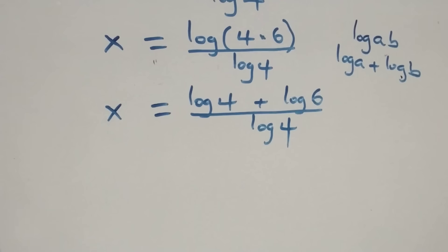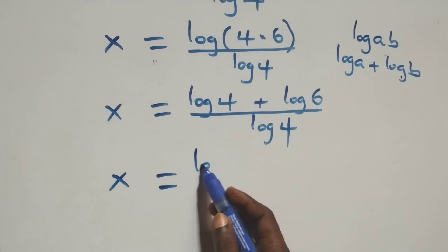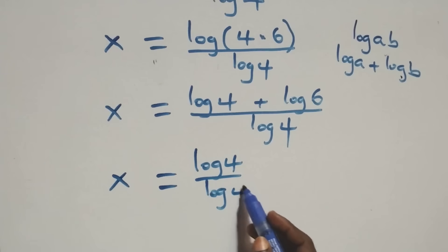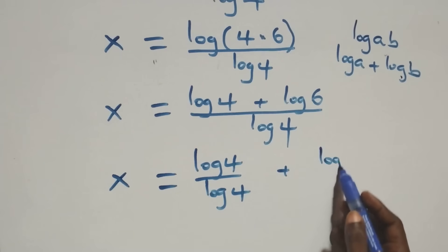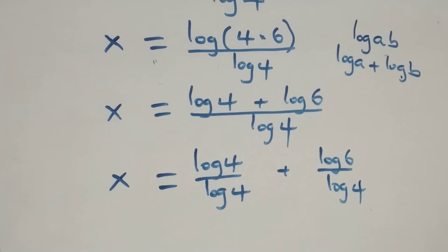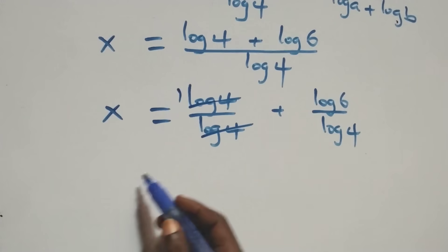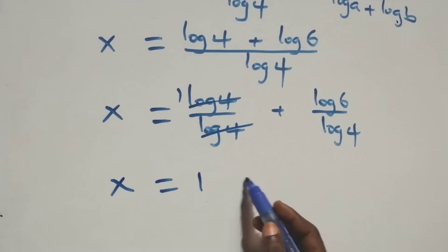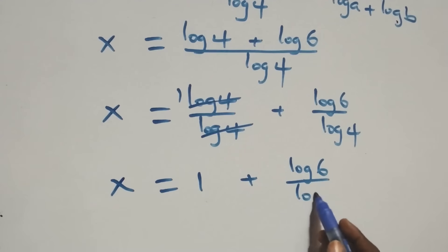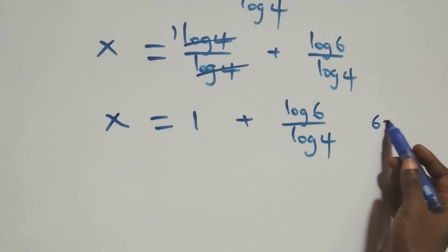Next step, we separate this into two fractions: x equals to log 4 over log 4 plus log 6 over log 4. This implies log 4 over log 4 cancels to 1, and we have x equals to 1 plus log 6 over log 4.